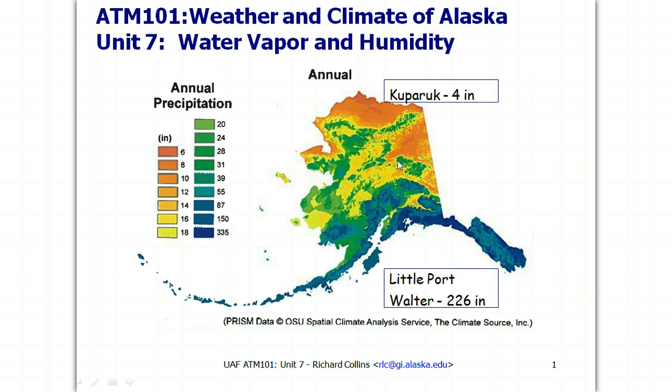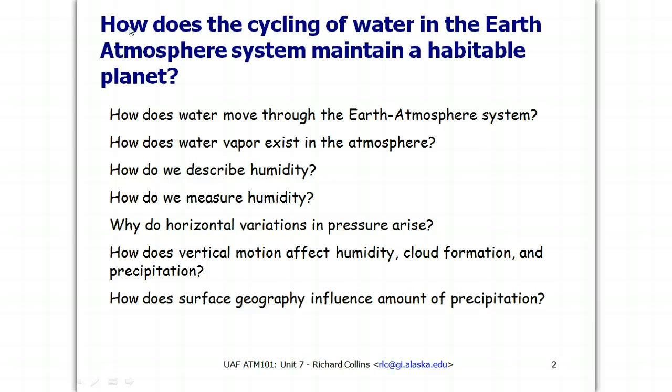However, the pattern is more complicated than that. We see higher values patterned through Alaska, generally associated with higher elevations and lower values associated with lower elevations. This is highlighted in the Alaska range in contrast with the Copper River Valley, the interior Tanana Valley in contrast with the White Mountains.